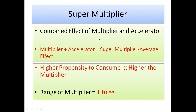The super multiplier is the combined effect of the multiplier and the accelerator — multiplier plus accelerator gives rise to the super multiplier. Higher propensity to consume leads to a higher multiplier, since the multiplier is directly proportional to MPC. An important fact for competitive exams: the range of the multiplier is always one to infinity.